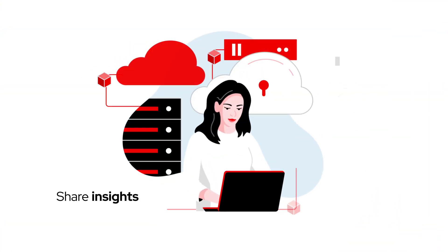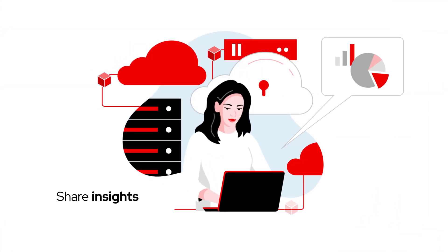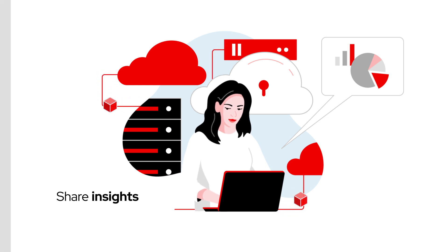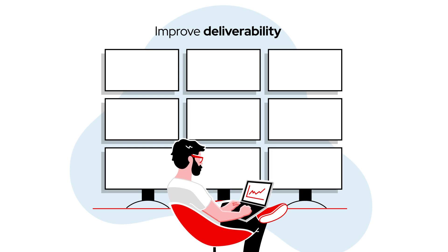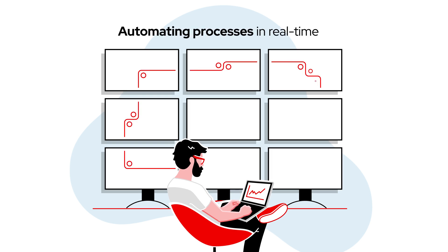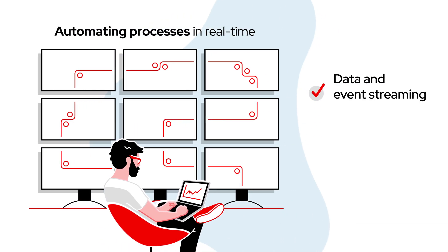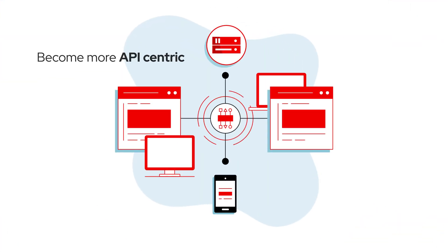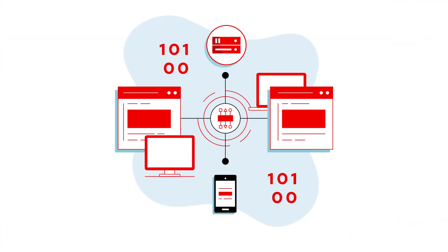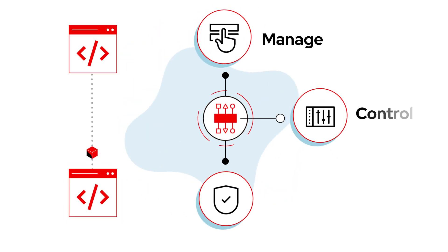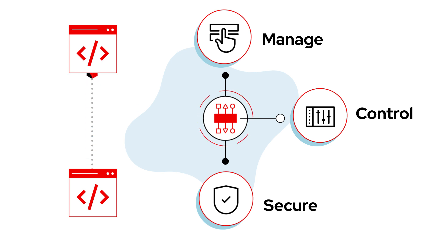Share insights as they happen by overcoming the complexities of connected apps to a wide variety of data sources and services. Improve deliverability by automating processes in real-time with data and event streaming and distribution. Become more API-centric and enable your development team to work independently without worrying about compatibility. Manage, control, and better secure APIs so only the right applications talk to each other and data is protected.